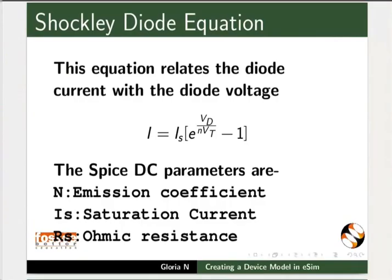The Shockley diode equation relates the diode current i with the diode voltage Vd. The main SPICE parameters that determine the DC analysis are emission coefficient N, saturation current IS, and ohmic resistance RS. For an ideal diode, N equals 1. This factor mainly accounts for carrier recombination.